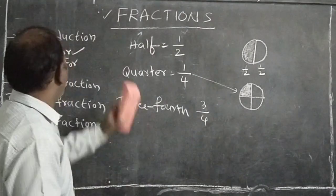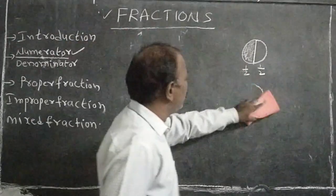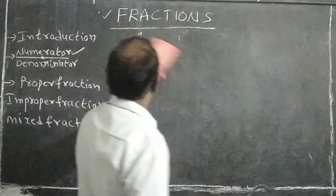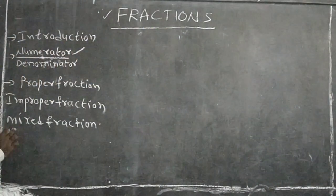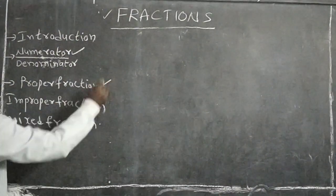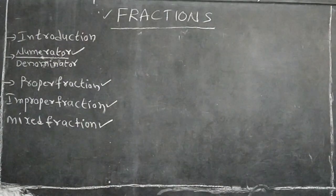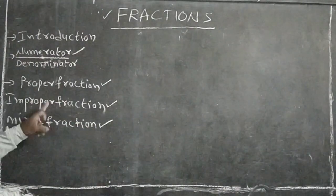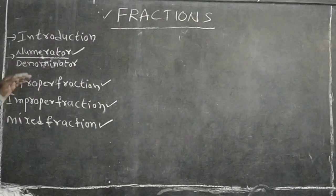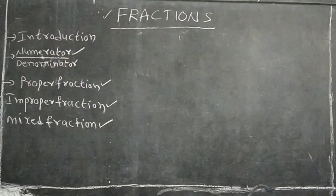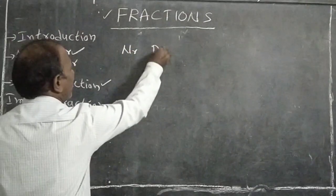How many kinds of fractions are there? There are three kinds of fractions: proper fractions, improper fractions, and mixed fractions. These are all related to the numerator value and the denominator value.